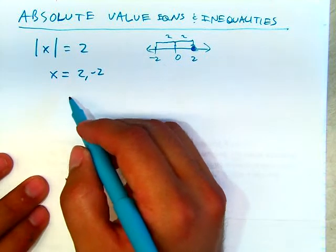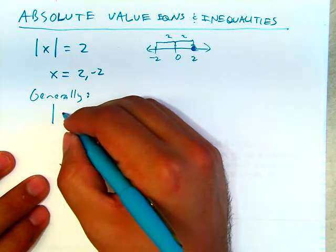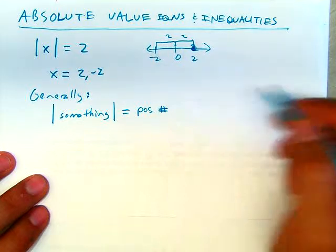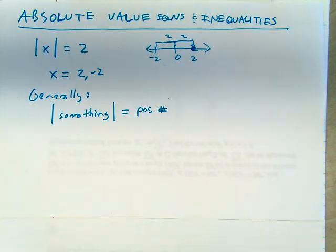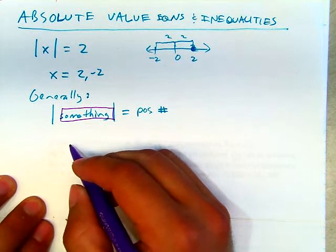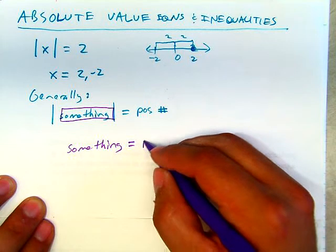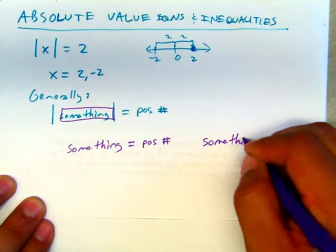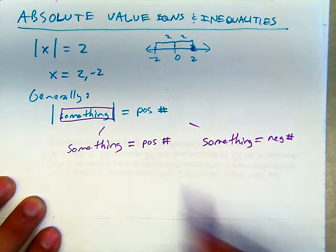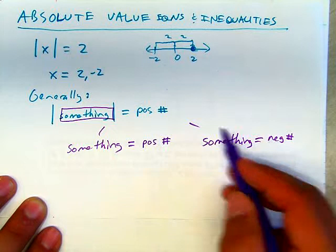Using that principle, the general method: if you have the absolute value of something equal to a positive number, you take whatever is inside the absolute value and set it equal to the positive number, and then also set it equal to the negative of that number. So you split it up into two cases.